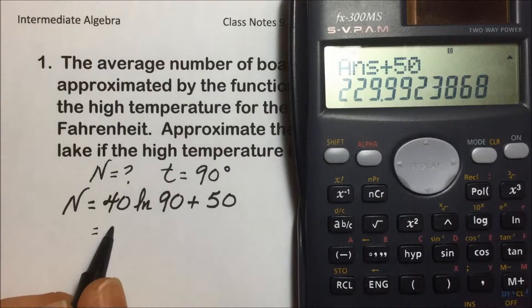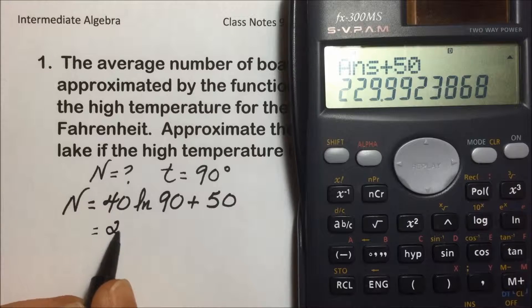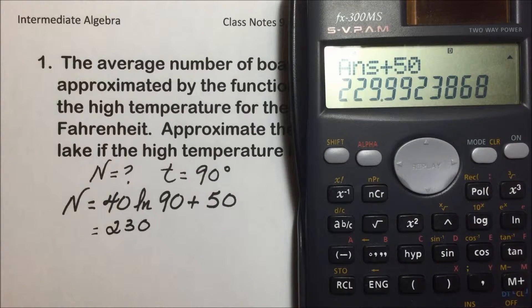That results in 229.9, rounding to the nearest whole number, which I would suspect with boats would be appropriate. So on a 90 degree day for this lake, approximately 230 boats should be expected.